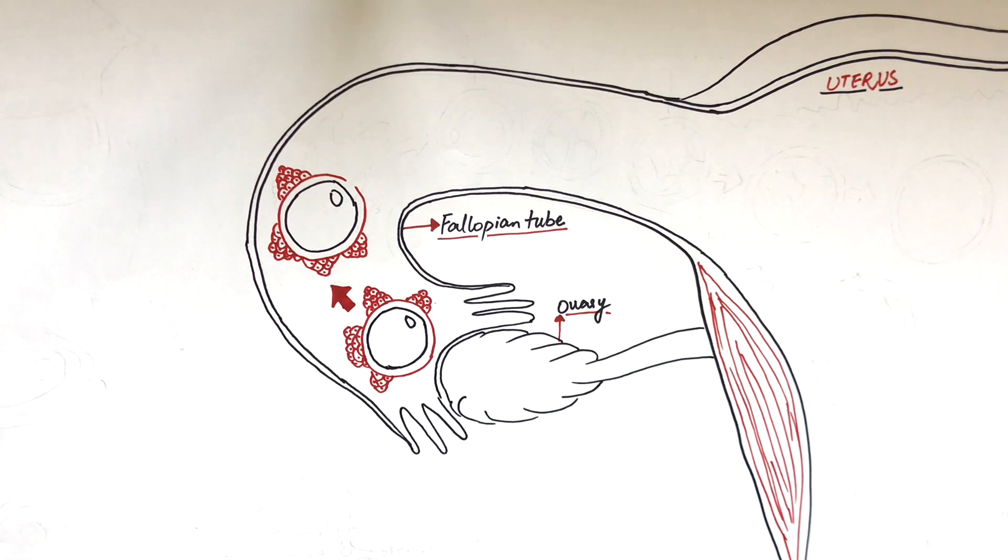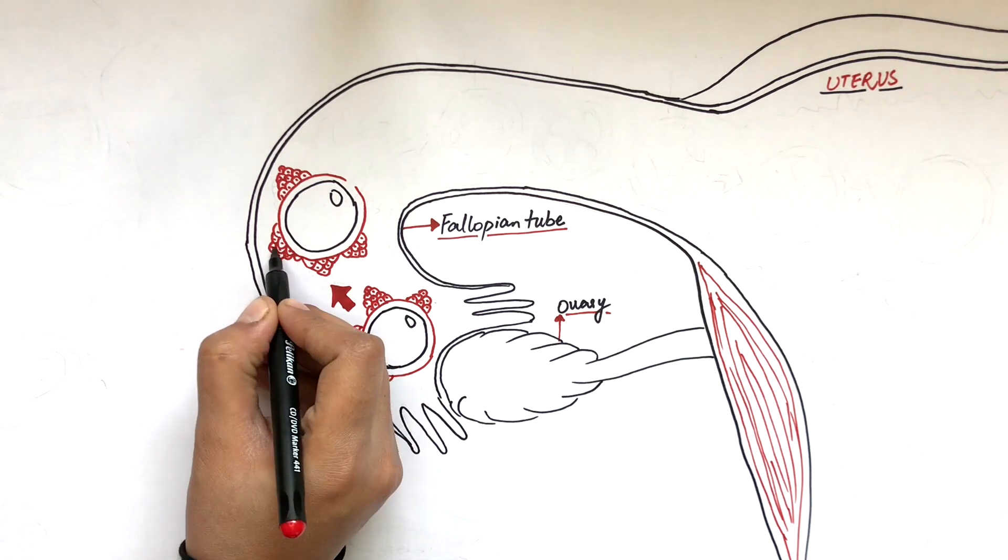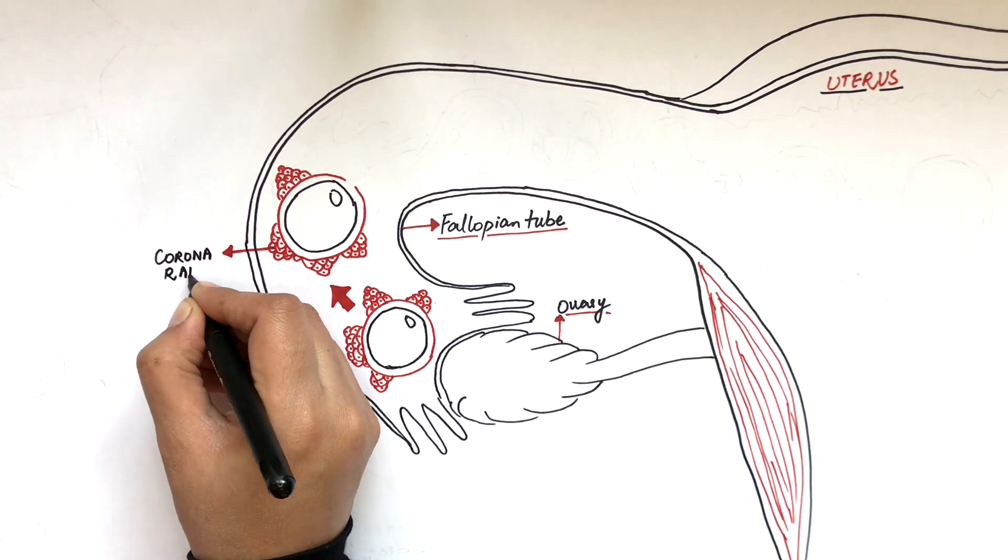At this point, the oocyte is lined by a layer of glycoprotein called the zona pellucida. Over this layer, clusters of cells are arranged in a radiated pattern called the corona radiata.